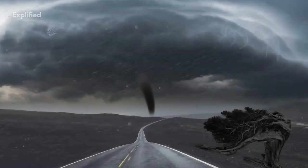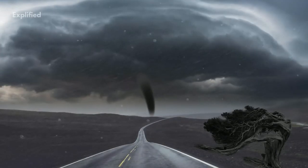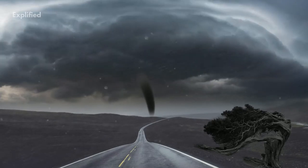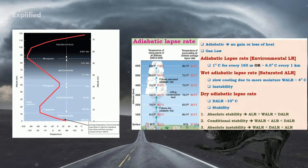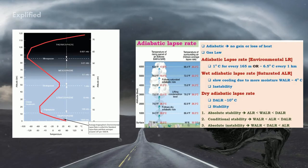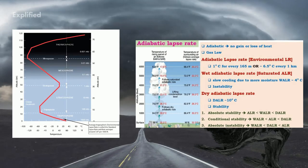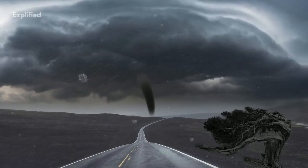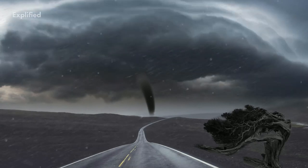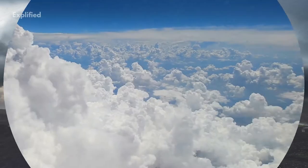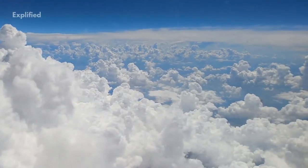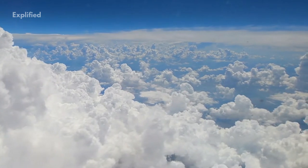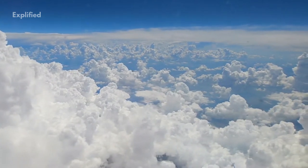A cyclone always begins with a thunderstorm. During this, air rises as it is warm and light. At a certain height, due to the lapse rate and adiabatic lapse rate, the temperature of air falls and moisture in the air undergoes condensation. Condensation releases latent heat making the air warmer, hence becoming much lighter and rising even higher. The space is filled by fresh moisture-laden air, condensation occurs again, and the cycle is repeated as long as moisture is supplied.